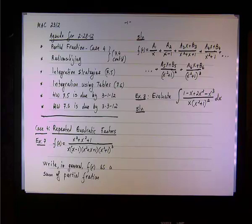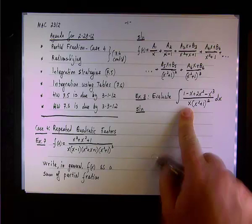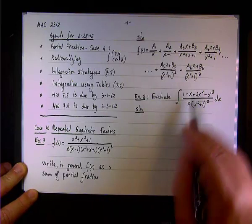The first thing we check: do we have a proper rational function? The degree of the numerator is three. The degree of the denominator is 1 + 2×2 = 5. Since 3 < 5, this is a proper rational fraction — we don't need to perform long division or synthetic division. So we can go ahead and decompose.